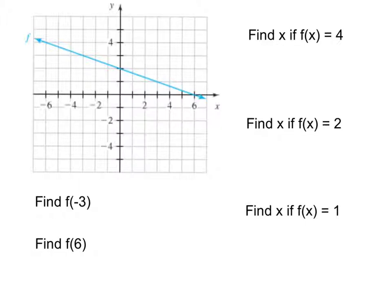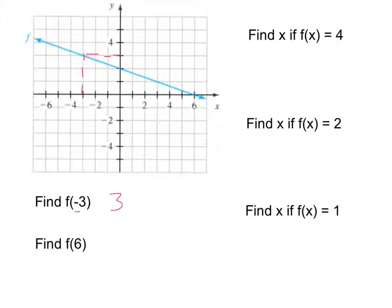Now let's see how this notation works when we have the graph of a function. Starting with f of negative 3: the x-coordinate negative 3 is the input, so we find negative 3 on the x-axis, go up to the curve, and read the corresponding output — that looks like 3. Next, f of 6: we find 6 on the x-axis, and since that point is right on the x-axis, the y-coordinate is 0.